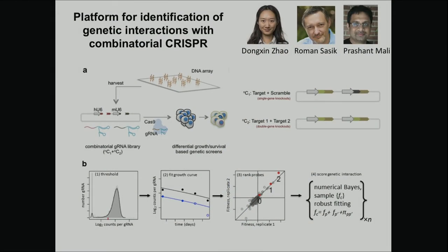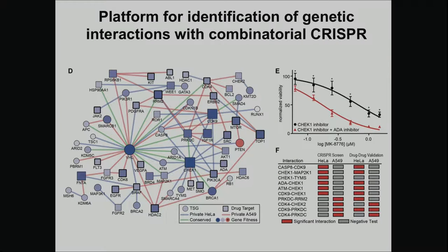The fact that a billion years of evolution conserves that synthetic lethal effect is pretty interesting. Since that paper, J.P. has been working with Prashant Mali — whose lab is in bioengineering here and was one of the original CRISPR authors when he was a postdoc for George Church — to map synthetic lethal networks using dual CRISPR-type technologies. This has been quite challenging to make work robustly, but after about a year and a half of development, we think we've got it. We can now draw very large networks of synthetic lethals.